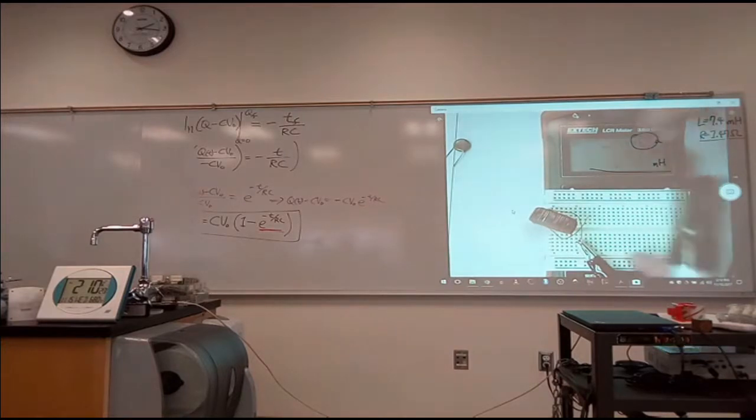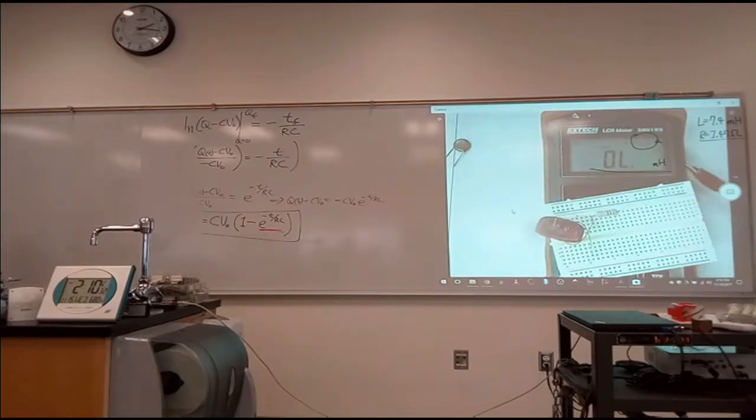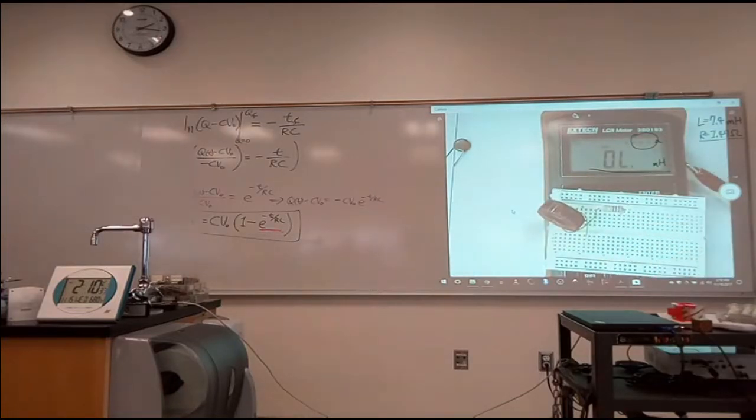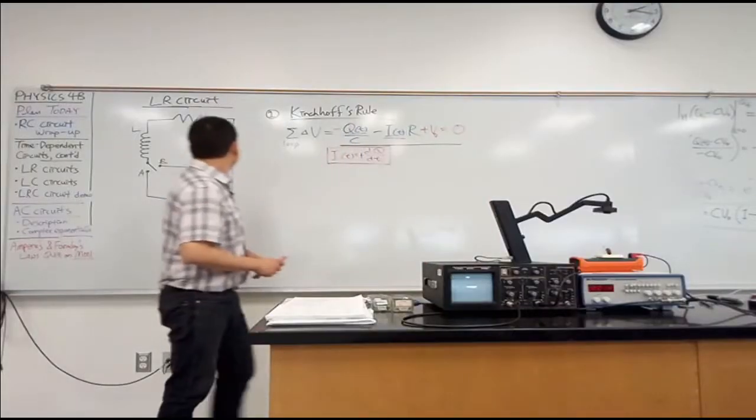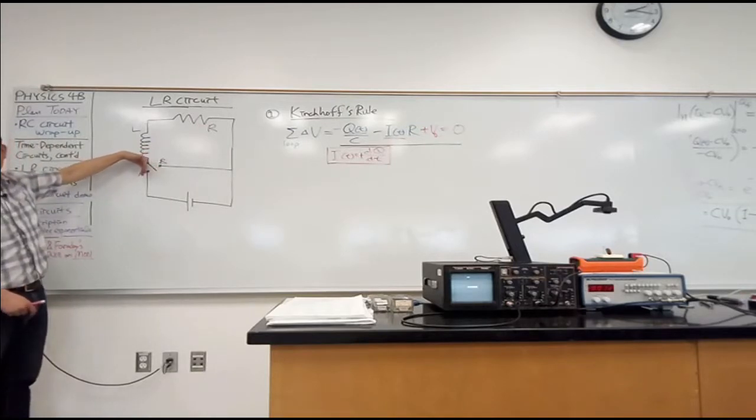So if I want to complete the, or start building the LR circuit, where I have this one end of inductor, I'd hook up a resistor there. So that would be my LR circuit. This is 100 ohm, by the way. I got different resistance. And nothing interesting is happening until you connect it to a battery.